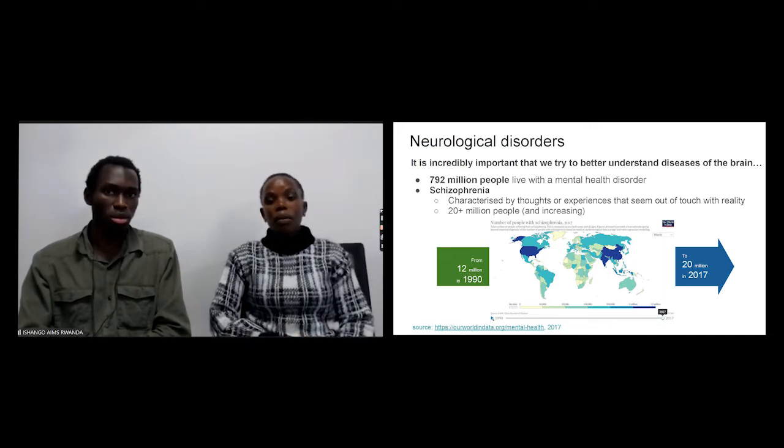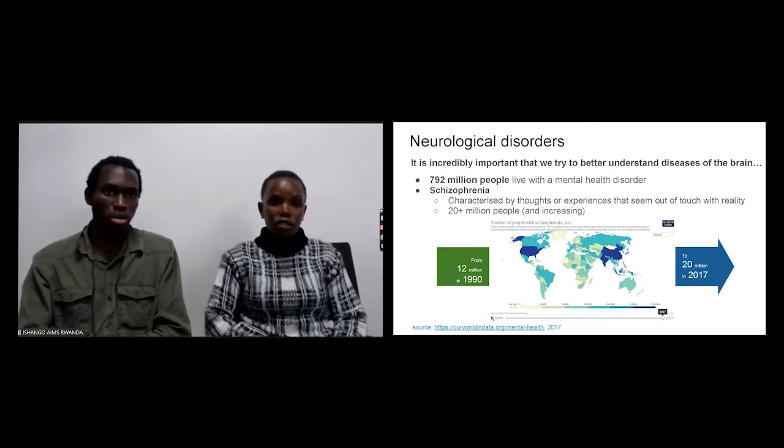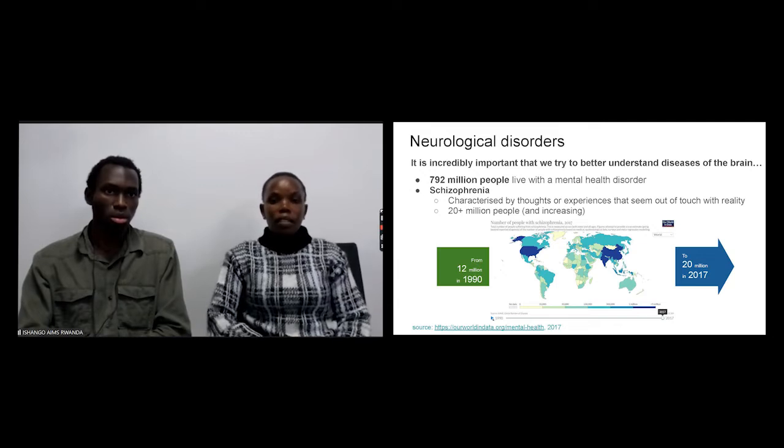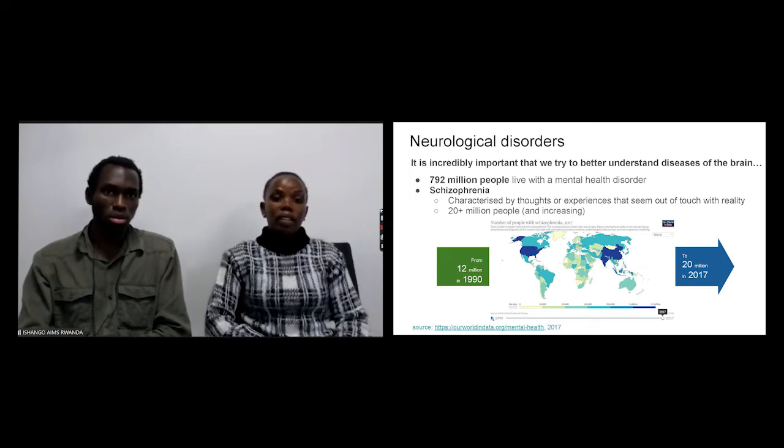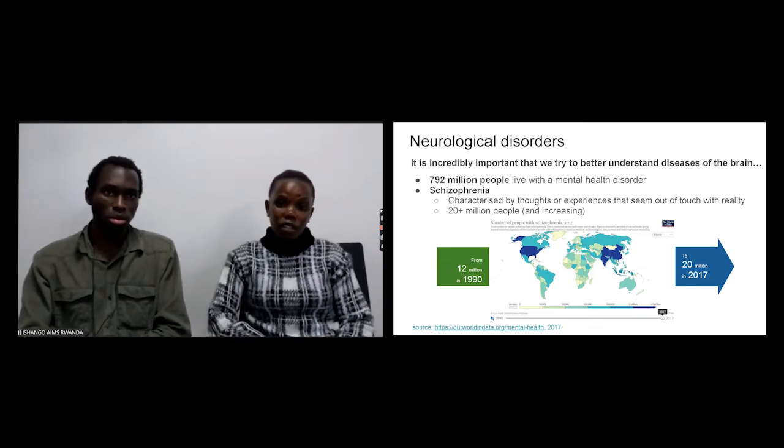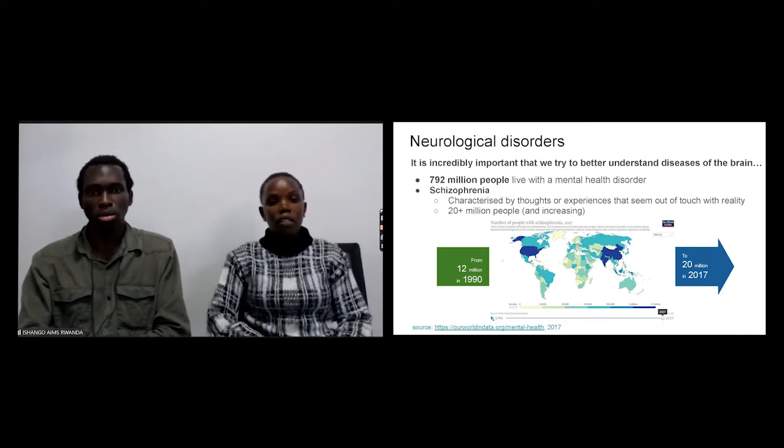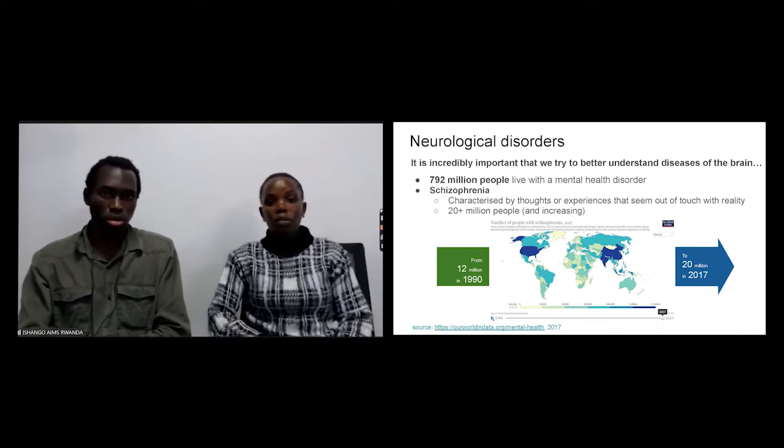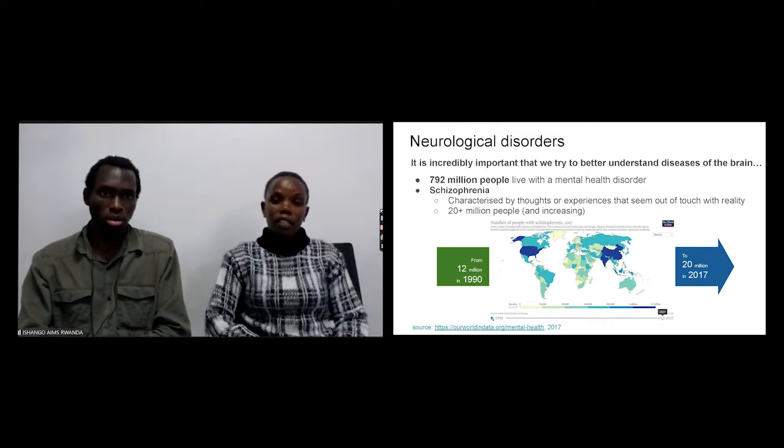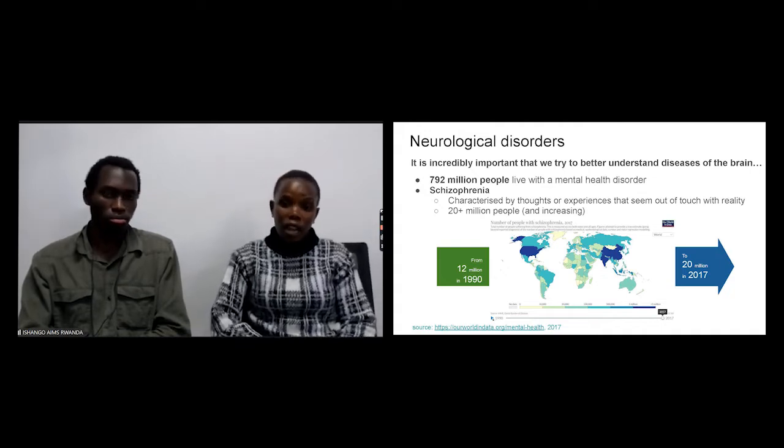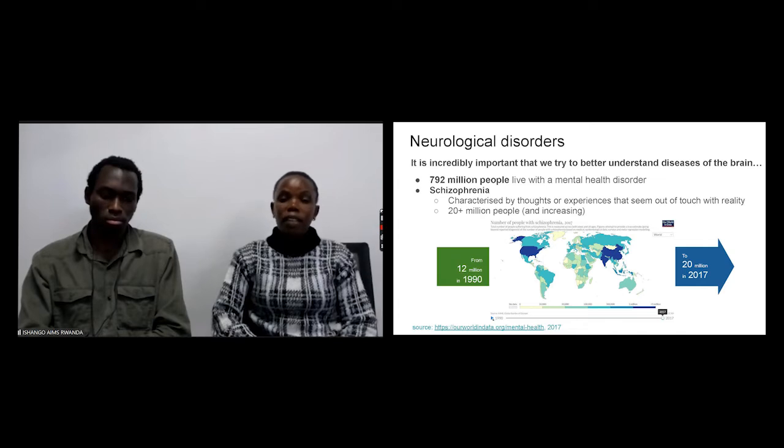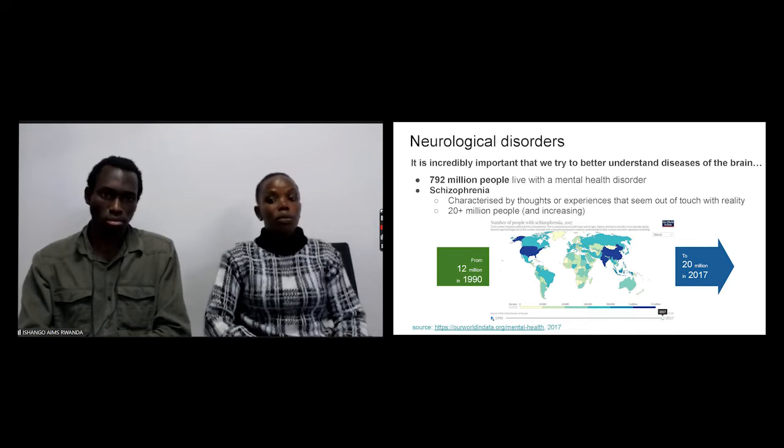It's very important that we understand neurological disorders, as it's affecting around nine million people around the world. Particularly schizophrenia, which is our focus in this work, is affecting around 20 million people around the world and is increasing fast. As you can see, from 1990 it was affecting only 12 million, and up to 2017 it was affecting 20 million people.